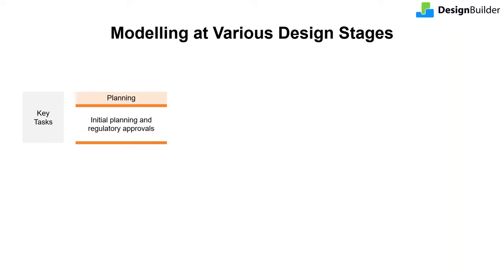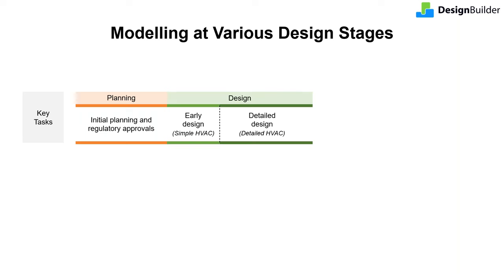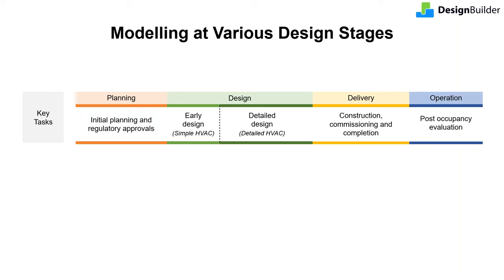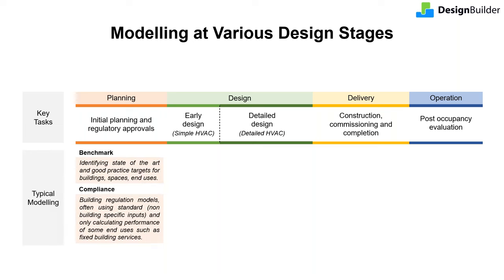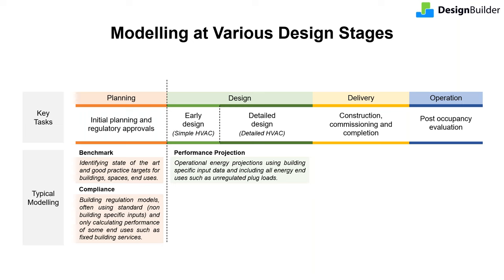The building procurement process goes through multiple phases: project conceptualization and planning, design development, construction and handover, and post-completion operations and maintenance. The typical role in initial stages is to determine if the project targets and benchmarks can be achieved, setting realistic expectations. Compliance-related modeling is also undertaken and may extend into design stages. Most performance modeling happens during design stages, and as the design evolves the model evolves and gets customized to project-specific details.